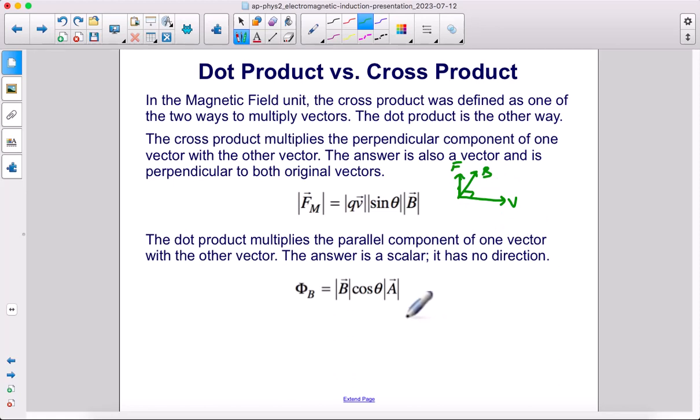However, the dot product multiplies the parallel component of one vector with the other vector. This answer is a scalar. It has no direction. Flux is not a vector. So once again on the next slide, we're going to talk about this vector, the area vector.